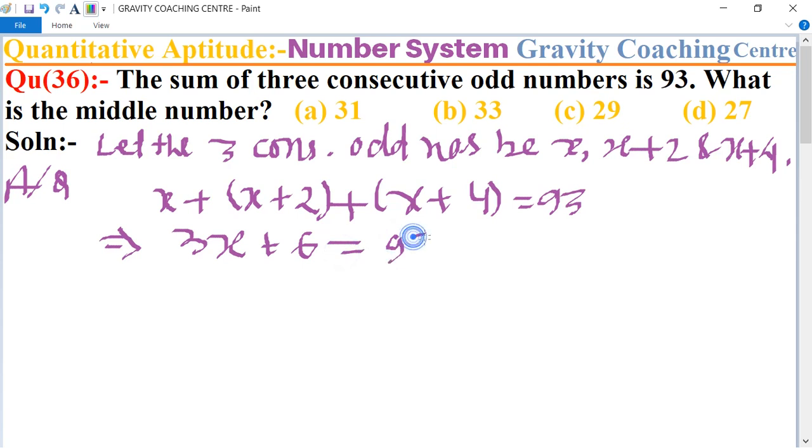This implies that 3x = 93 - 6 = 87. So 87 divided by 3 gives us x equal to